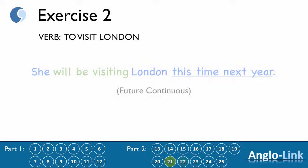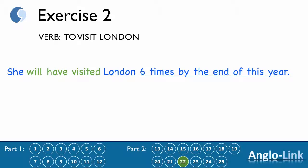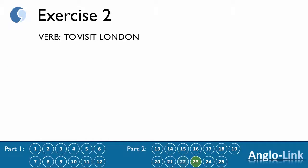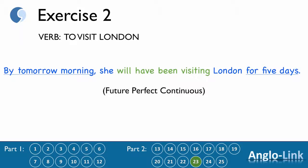Number 22: 'She ___ London six times by the end of this year.' Answer: 'She will have visited London six times by the end of this year.' Future perfect. Number 23: 'By tomorrow morning, she ___ London for five days.' Answer: 'She will have been visiting London for five days.' Future perfect continuous.